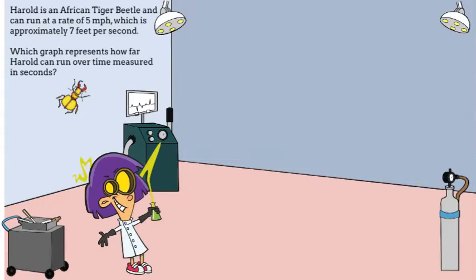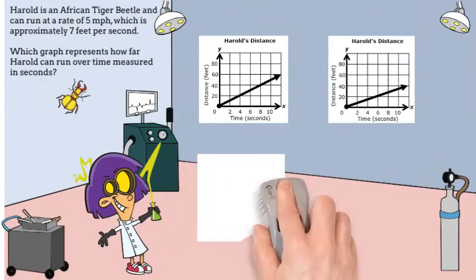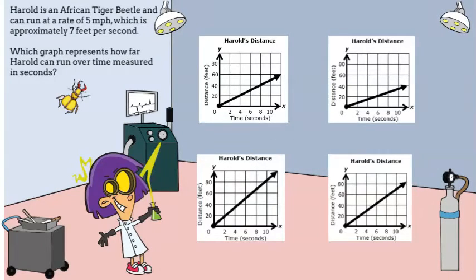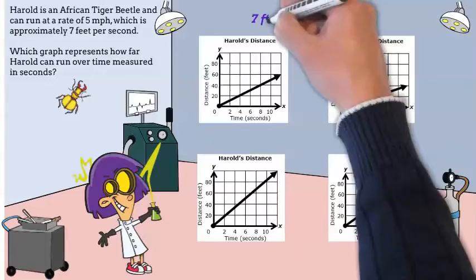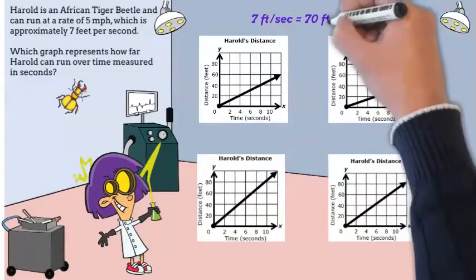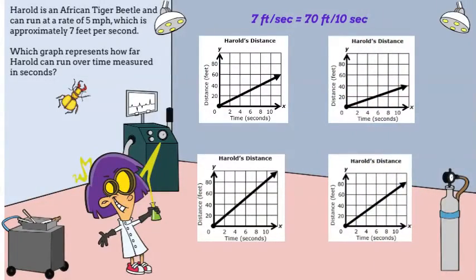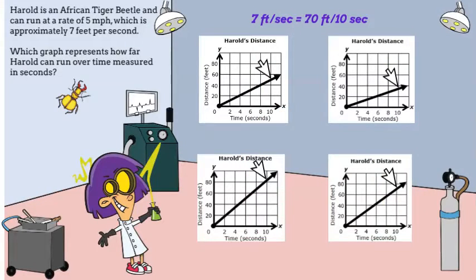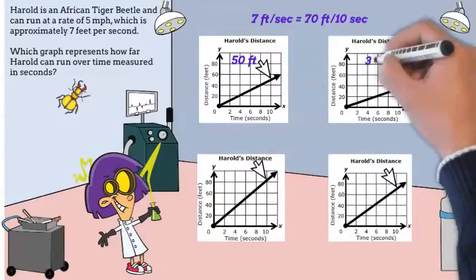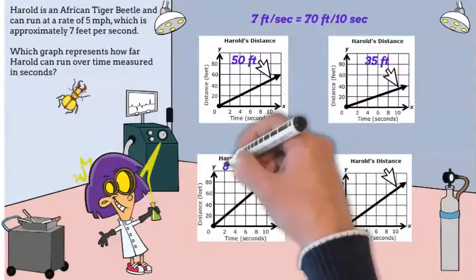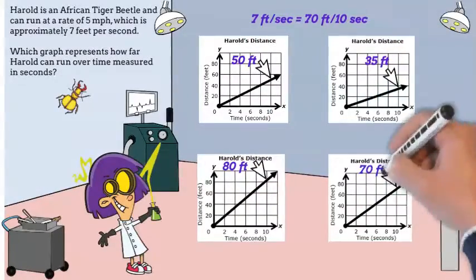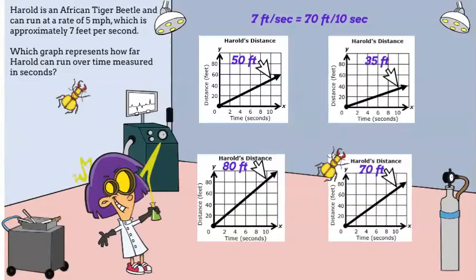This time we want to know which graph represents how far Harold can run over time measured in seconds. We know that Harold can run seven feet per second. If we multiply by 10, this means 70 feet per 10 seconds. So let's look at the y values when x is 10 — the y values are 50, 35, 80, and 70. The bottom right graph is correct.